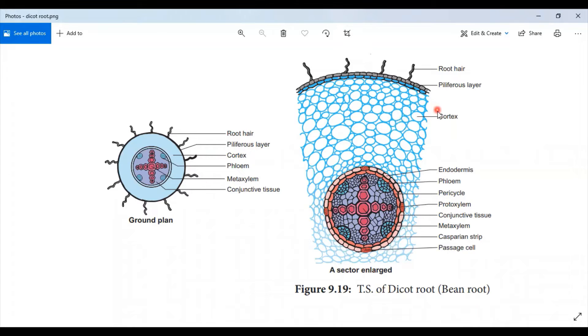Next layer is endodermis. It is made up of a single layer of barrel-shaped parenchyma cells. The cells of endodermis possess Casparian thickening in the radial and tangential walls.